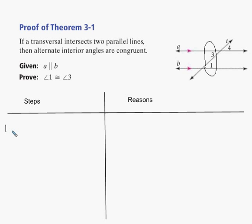So our first step is always the given. Line A is parallel to line B, and of course the reason for that is that it is given.